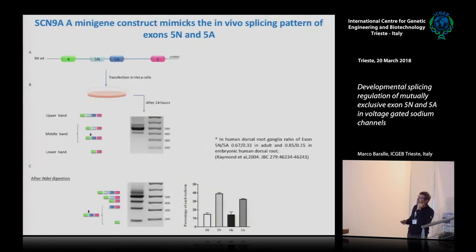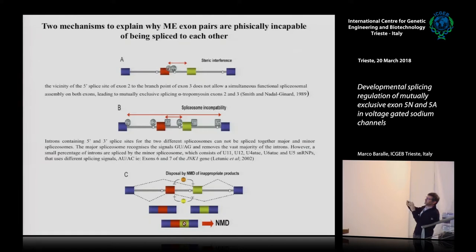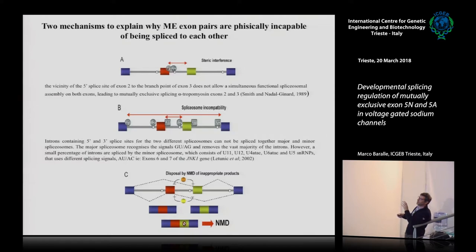As exon 5 is quite small — about 110 nucleotides — one of the first things we did was see if steric hindrance was the cause of the mutually exclusive splicing. When the intron is very small, it doesn't allow the assembly of U2 to the branch point and U1 to the 5' splice site, so the two exons can never be spliced together.